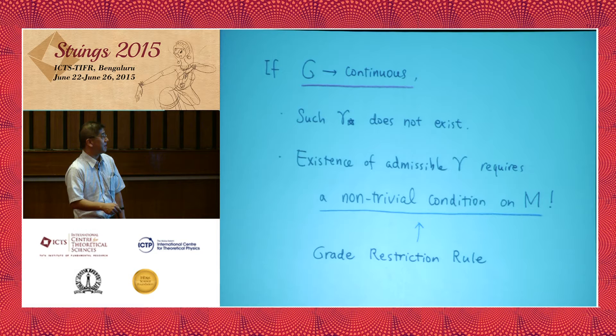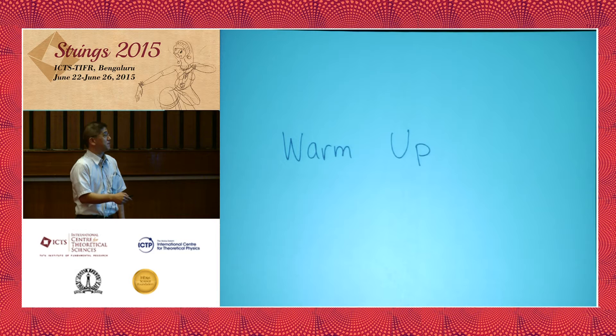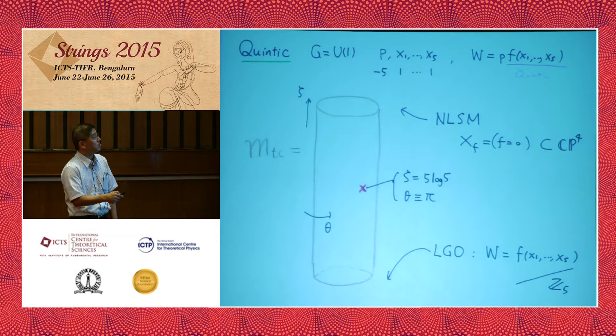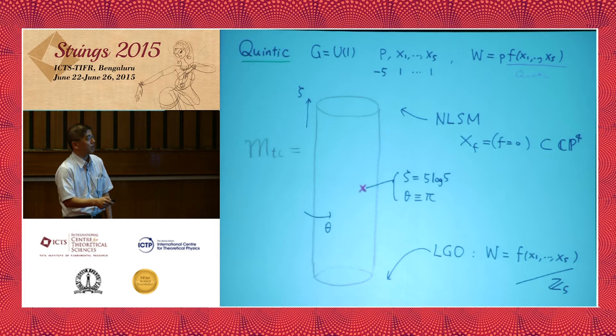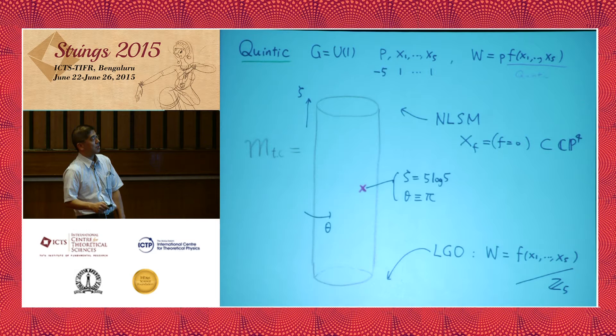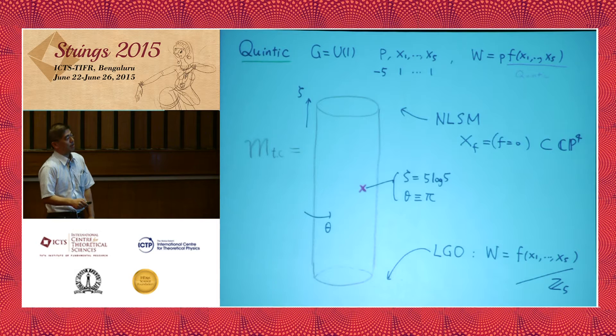Let me show this in the simplest interesting model: the model for the quintic. It has U(1) gauge group and six matter fields of specified charges, with superpotential determined by the quintic polynomial F. The theory has two phases. In one phase the gauge group is completely broken, and in the other the gauge group is broken to the Z_5 subgroup. The first is the phase of the nonlinear sigma model with target the quintic Calabi-Yau threefold, and the second is the Landau-Ginzburg orbifold phase. In between there is a single discriminant point.